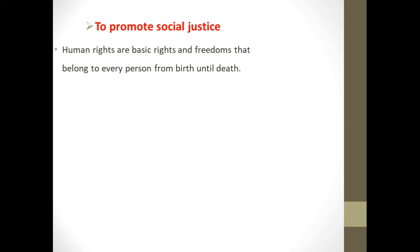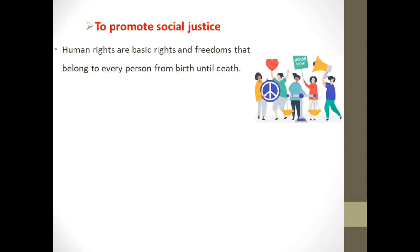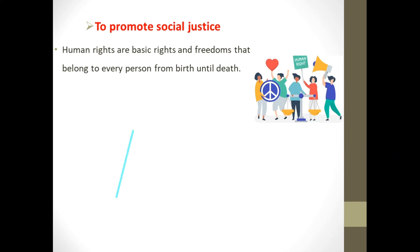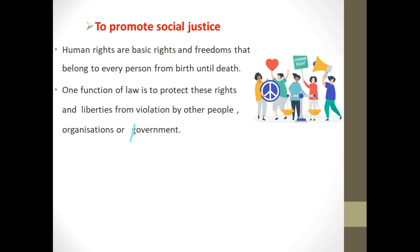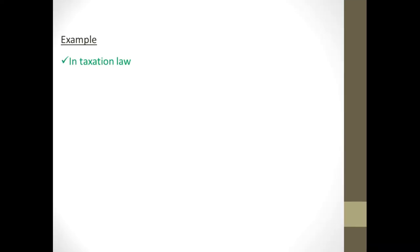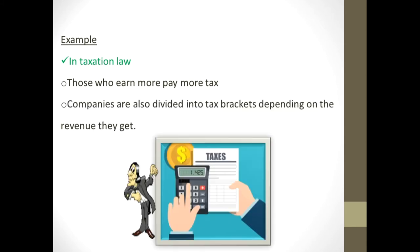The constitution provides for all manner of liberties and rights. These human rights are the basic rights and freedoms that belong to every person from birth until death, applying equally to everyone regardless of place of residence, gender, race, religion, language, or any other status. Some examples are the freedom of religious belief, prohibition of slavery and torture, right to a fair trial, and right to equality before the law. One function of the law is to protect these rights and liberties from violation by other people, organizations, or government. Additionally, law keeps equality between disadvantaged and advantaged members of society — for instance, in taxation law, people who earn more pay more tax than those who earn less.